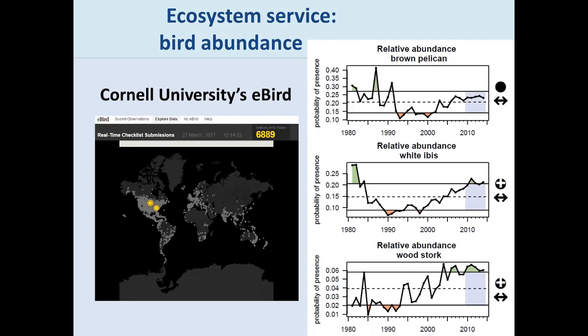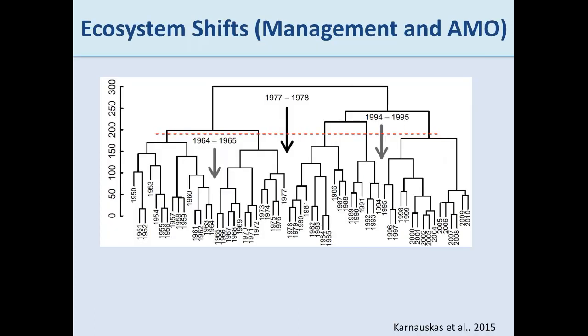Another component of the Ecosystem Status Report is bird abundance. Birding is a significant activity in the Gulf of Mexico, so using the Cornell University eBird database we tracked population dynamics. Shown are brown pelican, white ibis, and wood stork. All three populations have been steadily increasing since the mid-1990s to early 2000s — rising consistently over the past couple of decades.